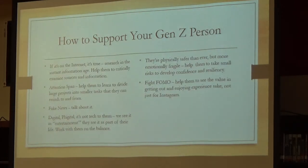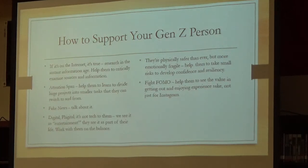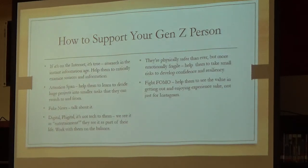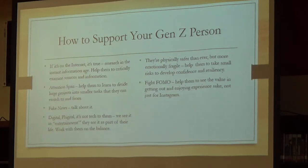Research shows that while they're physically safer than ever — unlike earlier generations, some of whom were in trenches in Germany at their age — they're more emotionally fragile. Because they're more protected, it's hard for them to think about failing, making mistakes, or not being perfect. We need to show them that in life those things are going to happen, and they need to take little risks.